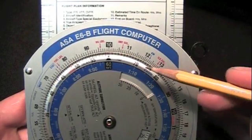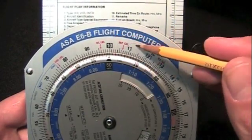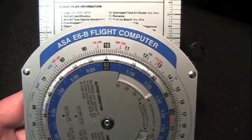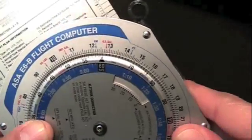The rate arrow on the outside of the disk is always set to indicate a value per hour on the most outer scale. First, set the rate arrow to 150 knots on the outer scale.